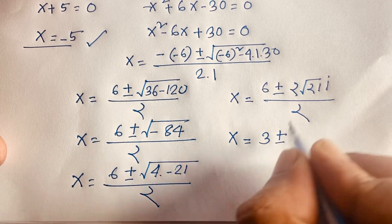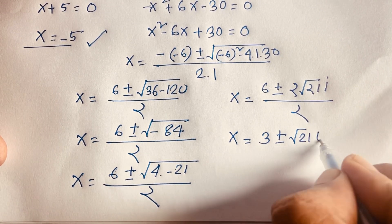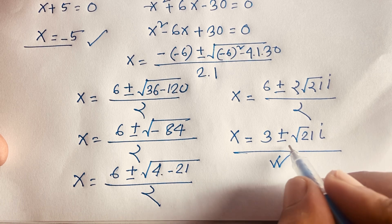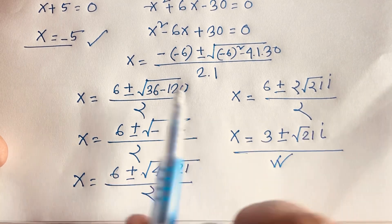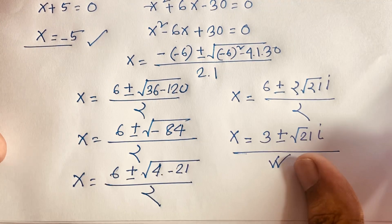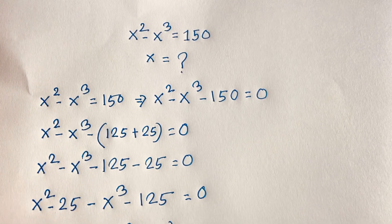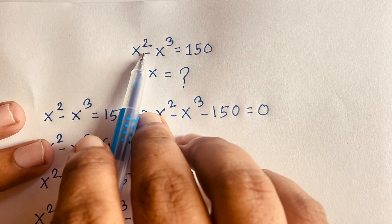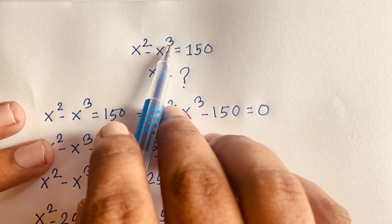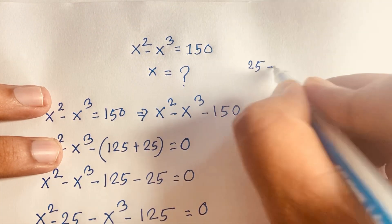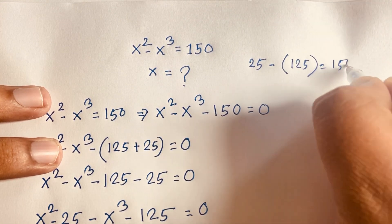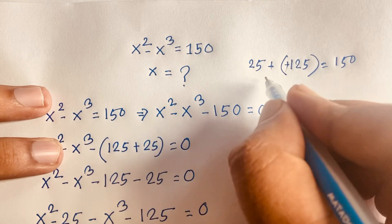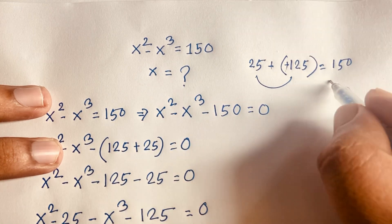So x equals minus 5 is our real solution. Let's check: the original equation is x squared minus x cubed equals 150. If x equals minus 5, then minus 5 squared is 25, and minus 5 cubed is minus 125. Since the exponent 3 is odd, the result is negative. So 25 minus negative 125 gives 25 plus 125, which equals 150. Verified!